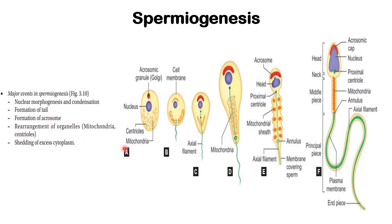Tail formation occurs when the two centrioles rearrange themselves into a proximal and distal centriole. The proximal centriole proliferates and forms the axial filament, which with further proliferation forms the principal piece — the entire tail. The distal centriole forms part of the midpiece and the distal part of the tail.